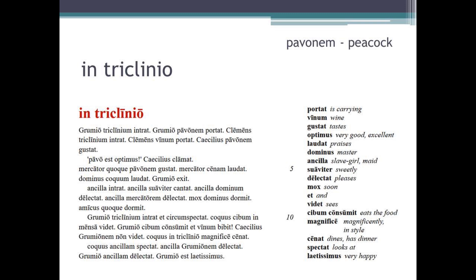Coquus in triclinio magnifice cenat — the cook eats the dinner in the dining room in style. Note: this sentence appears to be missing a verb in the textbook, so consumit has been assumed. Coquus Ancillam spectat — the cook watches the slave girl. Ancilla Grumionem delectat — the slave girl pleases Grumio. Grumio Ancillam delectat — Grumio pleases the slave girl.